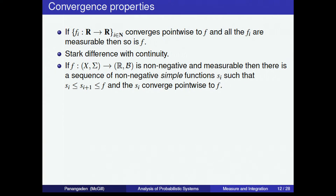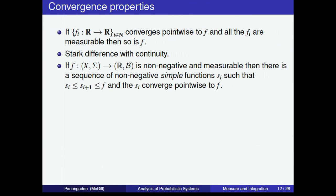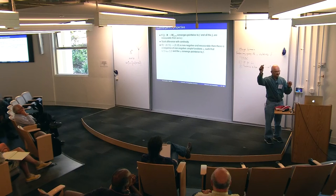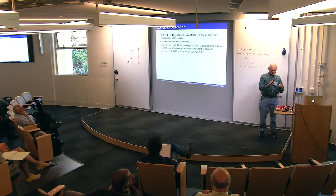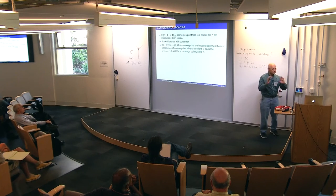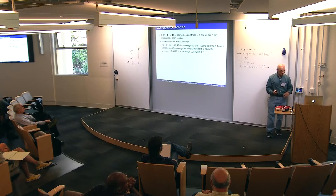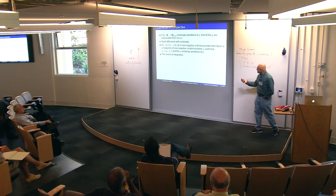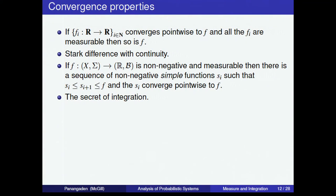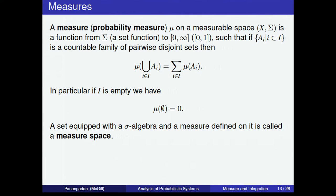Simple functions are finite linear combinations of characteristic functions — a finite number of jumps. Measurable functions might be complicated, but they are always pointwise limits of simple functions. This fact is the secret to defining Lebesgue integration, which I will do on one slide.